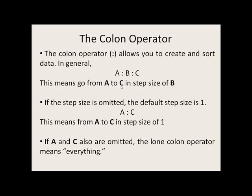The colon operator allows us to create and sort data very easily. The general form is A colon B colon C. What this means is that we're going to go from the value of A to the value of C in step sizes of B. If the step size B is omitted, the default step size is 1. If both A and C in addition to B are omitted, the lone colon operator means everything.